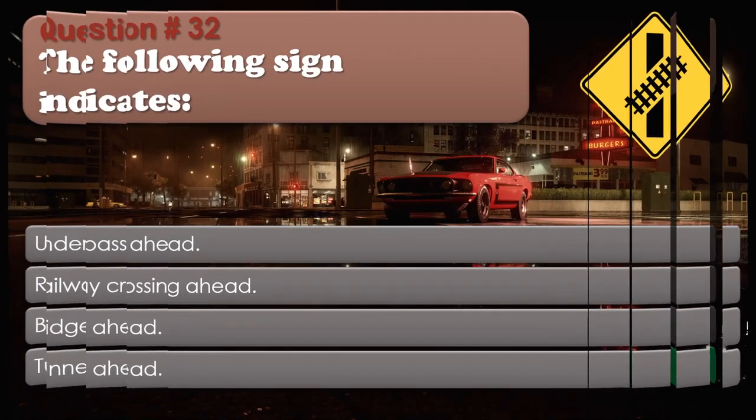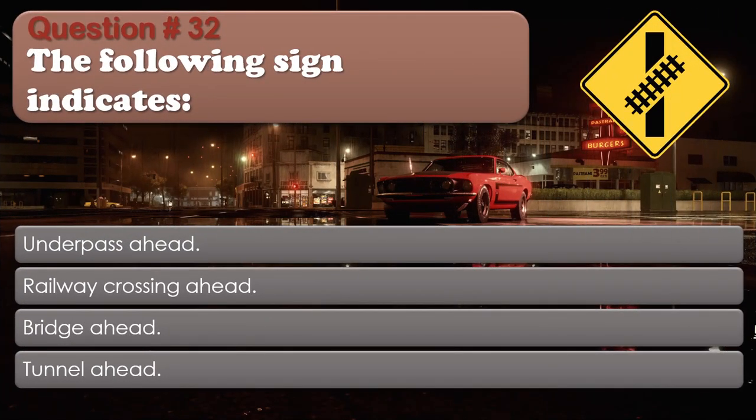Question number 32. The following sign indicates: Underpass ahead. Railway crossing ahead. Bridge ahead. Tunnel ahead. The correct answer is: Railway crossing ahead.